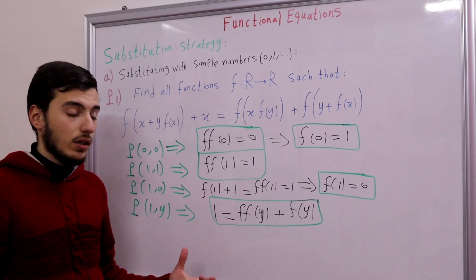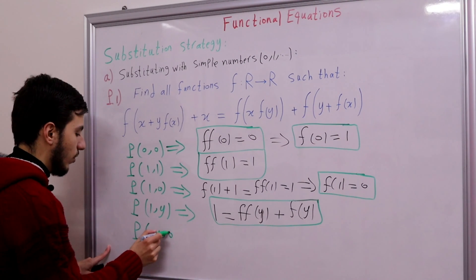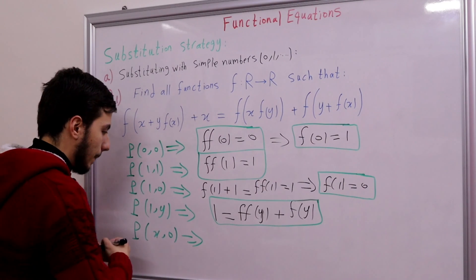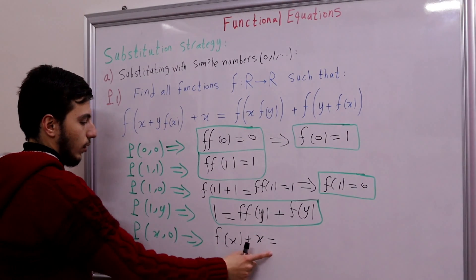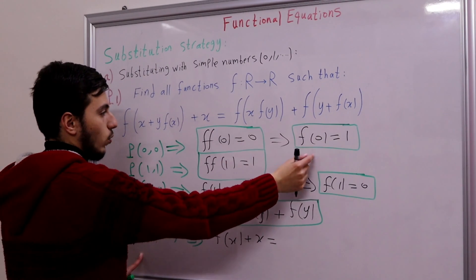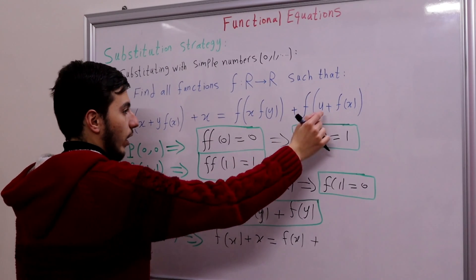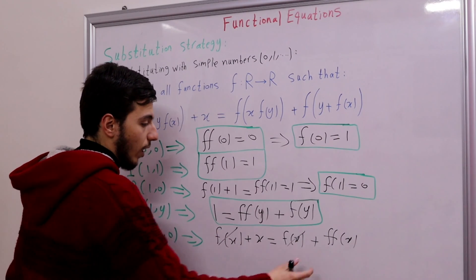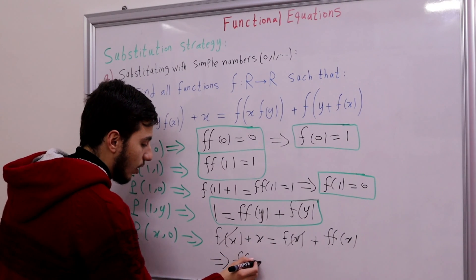Next, let's replace y with 0 and keep x as itself: P(x, 0). We get f(x + f(x)·x) = f(x)·f(0) + f(0) + f(x). Since f(0) = 1, the f(x) terms on both sides cancel, giving us f(f(x)) = x. So now we have the key result: f(f(x)) = x.